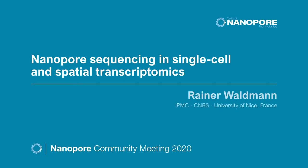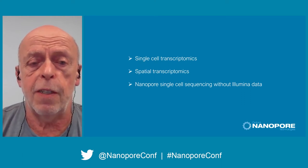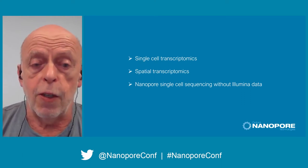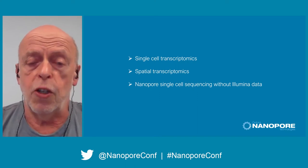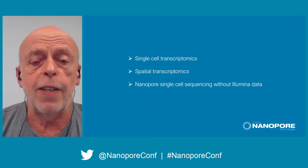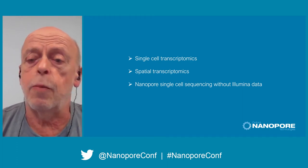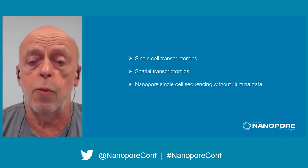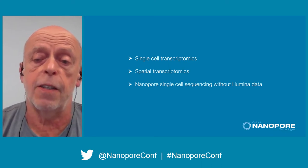I'd first like to thank the organizers for the opportunity to present our data here. My talk has three parts. In the beginning I'm going to talk about single-cell transcriptomics, then I'll talk about spatial transcriptomics. Those two approaches use both Illumina sequencing and nanopore sequencing. In the last part I present data that were only done with nanopore sequencing to show you that Illumina sequencing is not really necessary anymore.